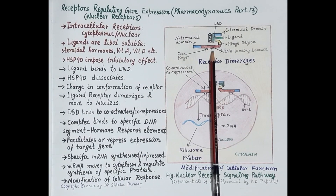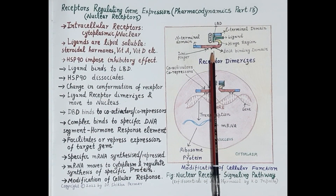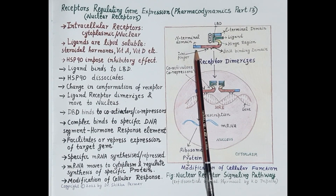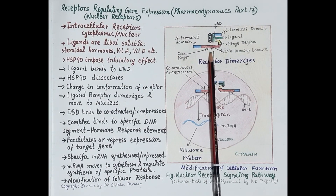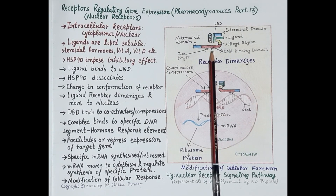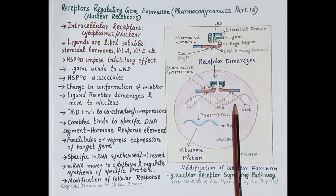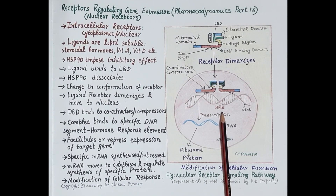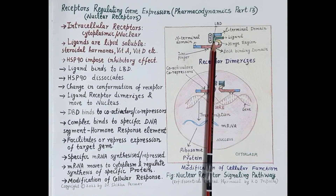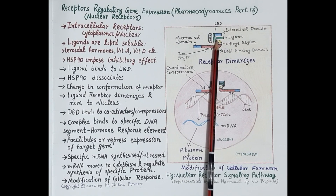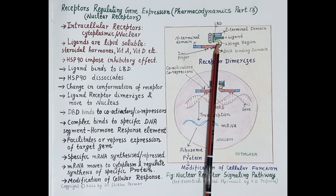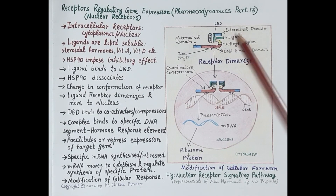Other ligands include vitamin A, vitamin D, etc. This receptor is composed of different regions. The blue region is the N-terminal domain. The red region is the DNA binding domain, and it consists of two zinc fingers that bind to a specific sequence of DNA called HRE — that is, hormone response element. The green region is the ligand binding region where the ligand binds. The yellow region is the hinge region connecting the DNA binding domain with the ligand binding domain. And there is also the C-terminal domain.